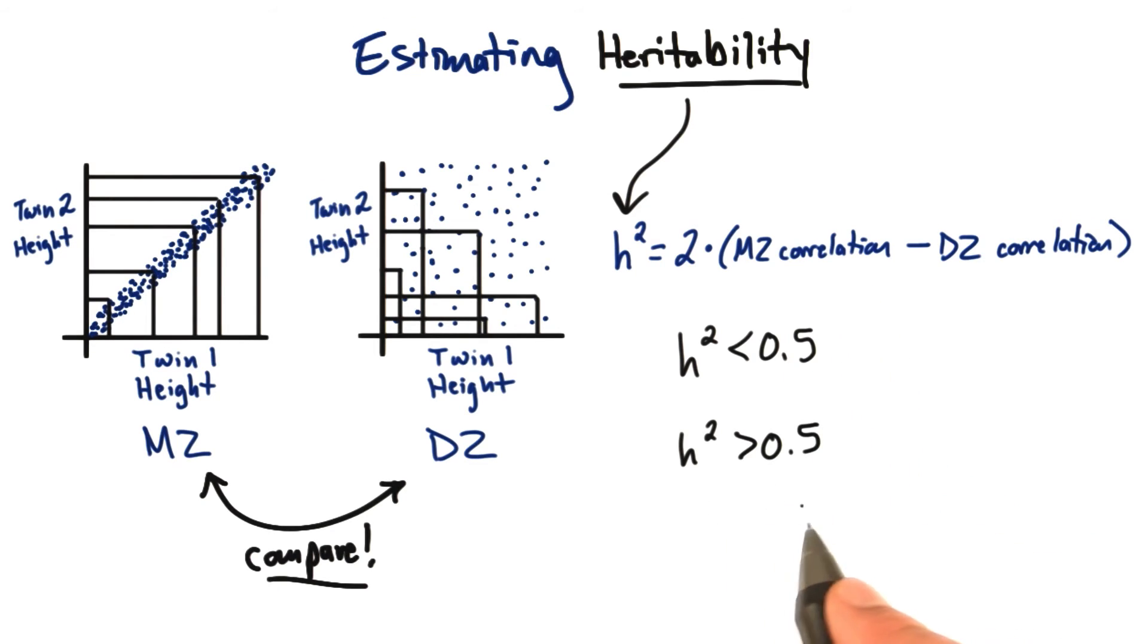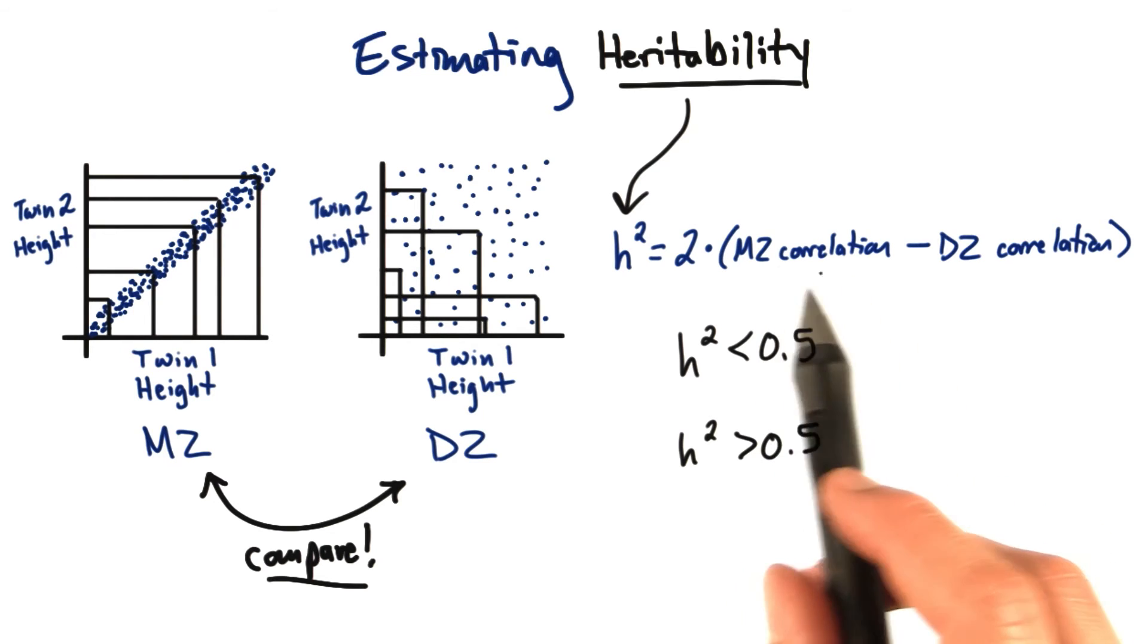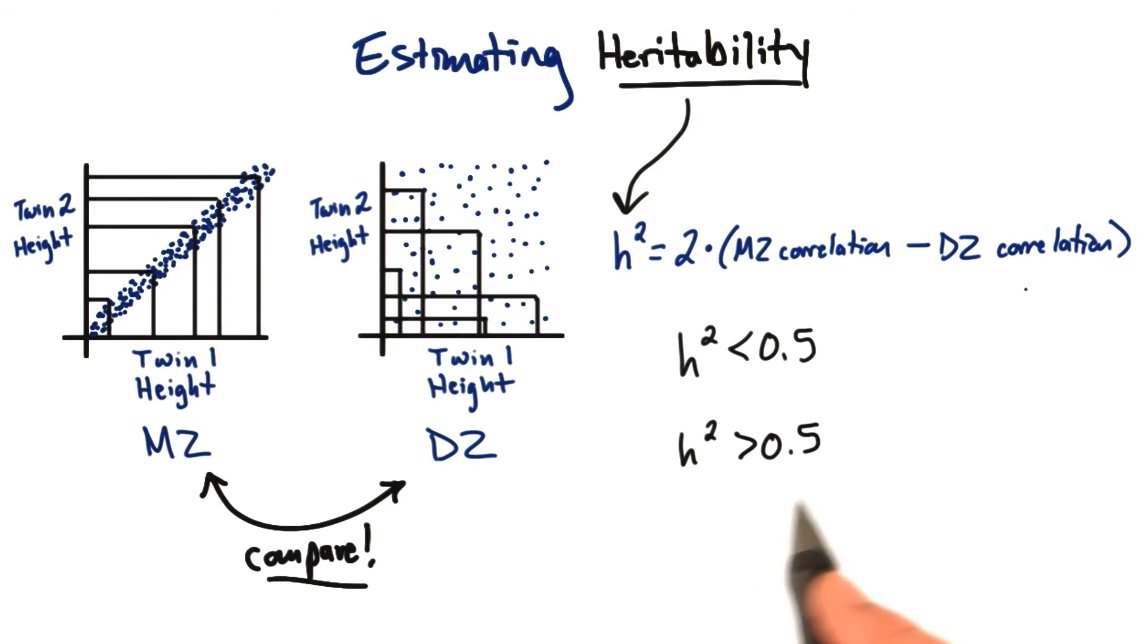But if variation chiefly reflects genetic influences, then the correlation between monozygotic twins is going to be much higher than dizygotic twins. So we're going to get a much higher heritability value.